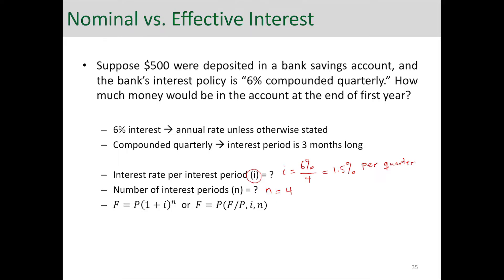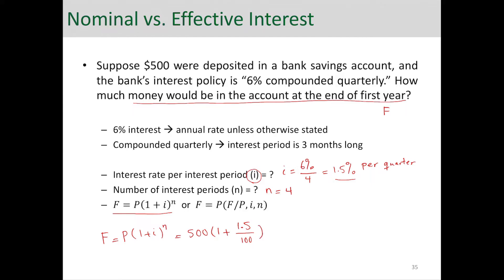Now, we want to calculate how much money would be in the account at the end of first year — that means F, the future value. We're going to use the familiar formula: F equals P times (1 plus I) to the N. P is the money deposited, so it's $500. I is 1.5%, so divided by 100, to the power of 4. That means every quarter I'm gaining 1.5% interest and there are 4 quarters.